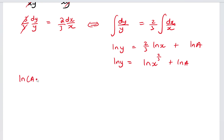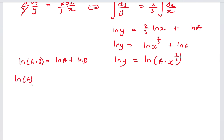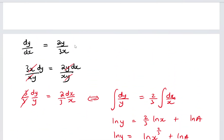So ln y equals ln(x^(2/3)) plus ln a. Using the log rule that ln a + ln b equals ln(ab), the right side becomes ln(a · x^(2/3)), which equals ln y. Since both sides have ln, we can exponentiate both sides to cancel the ln, and we're left with y equal to a multiplied by x to the power of 2/3. This is the solution to the given differential equation.